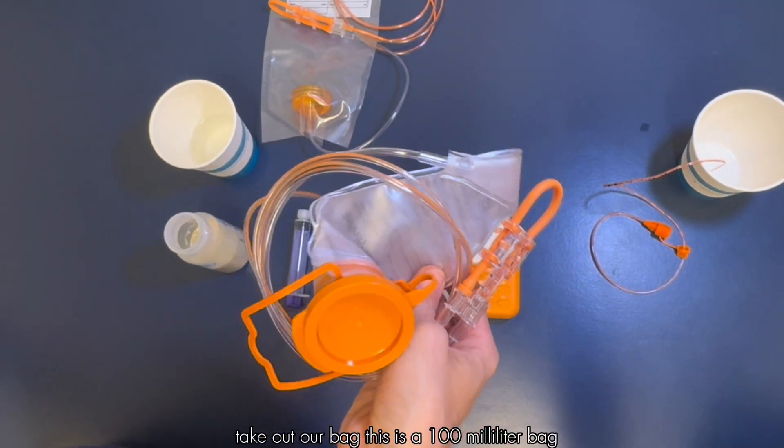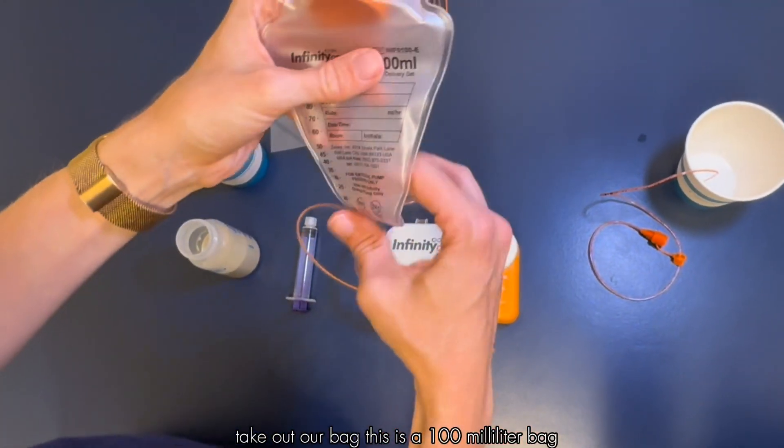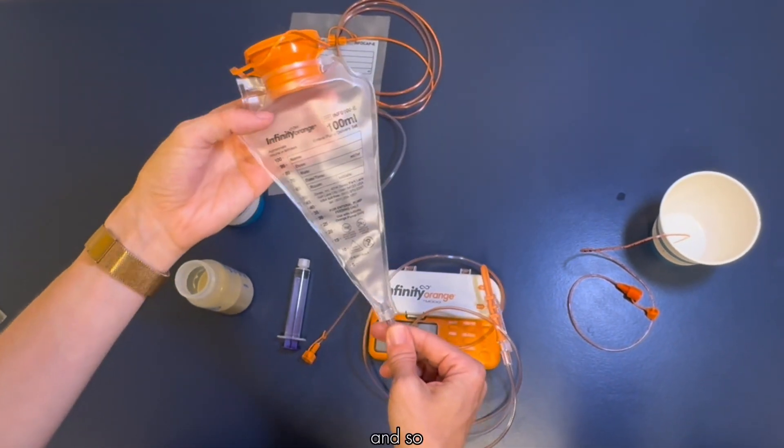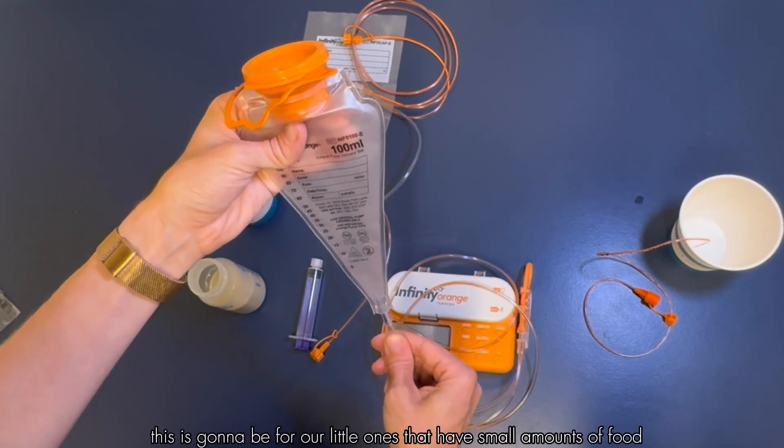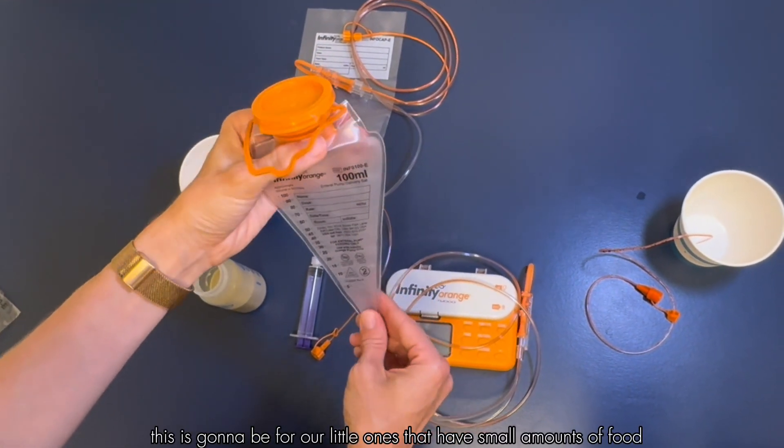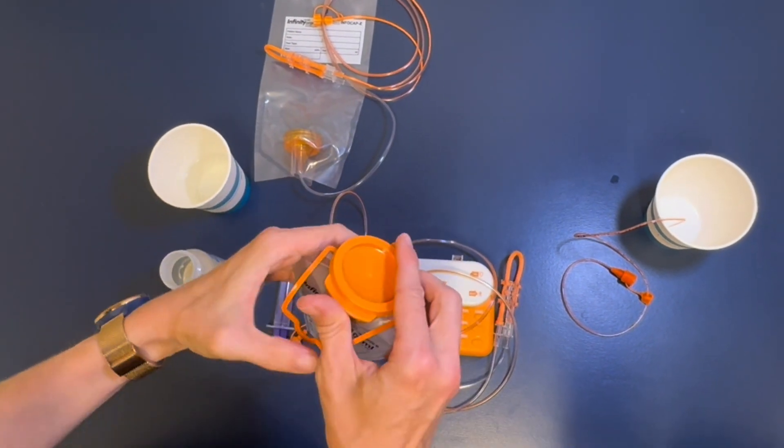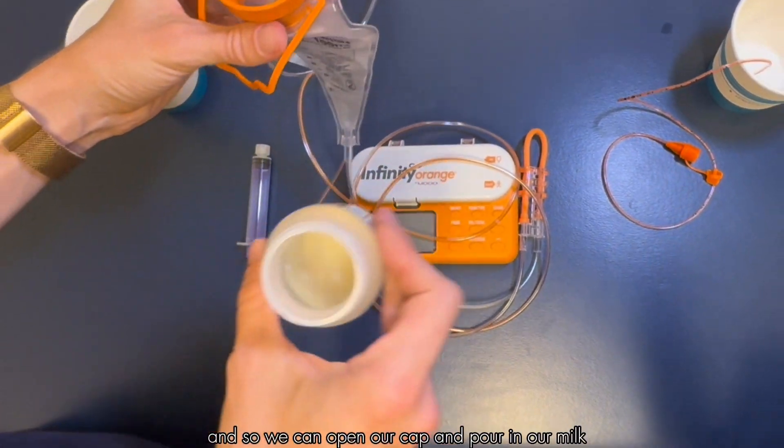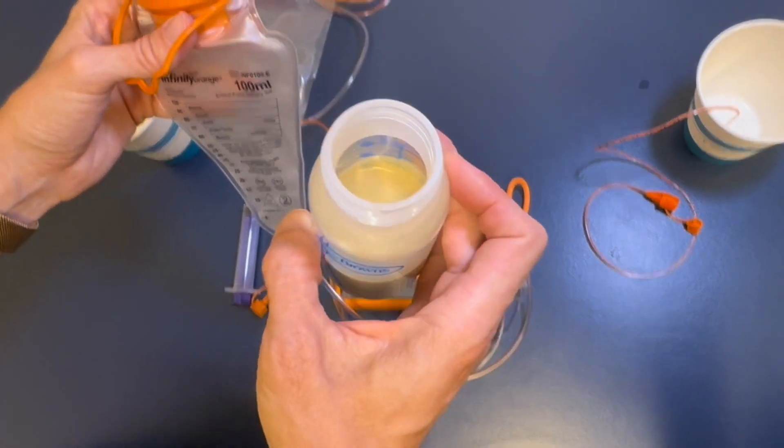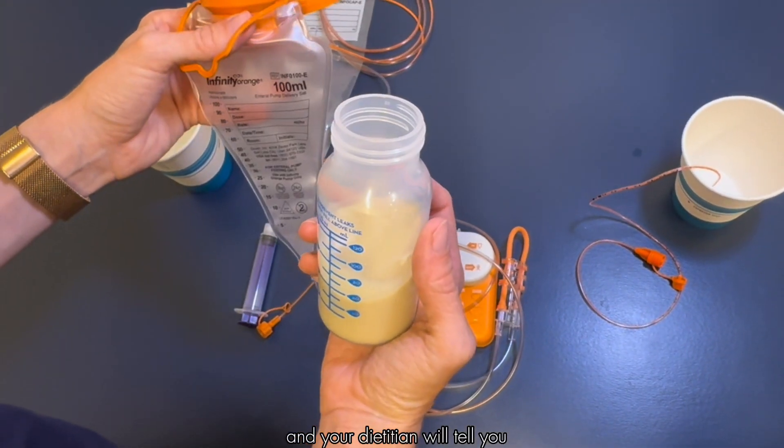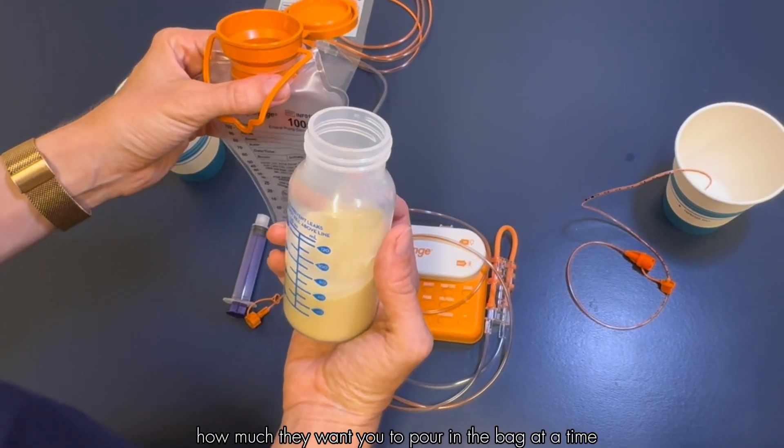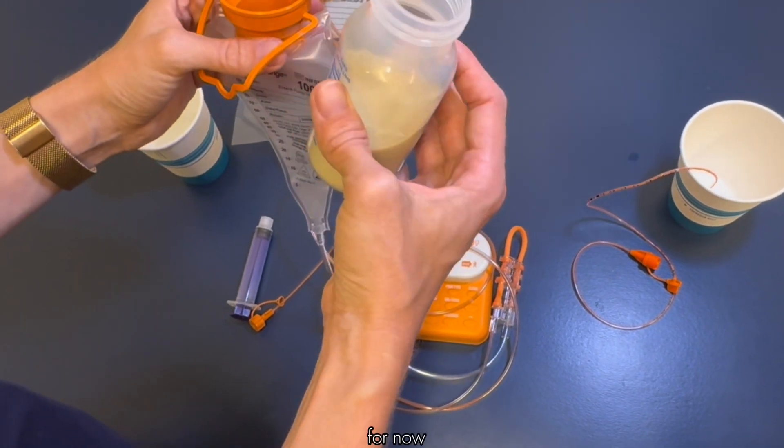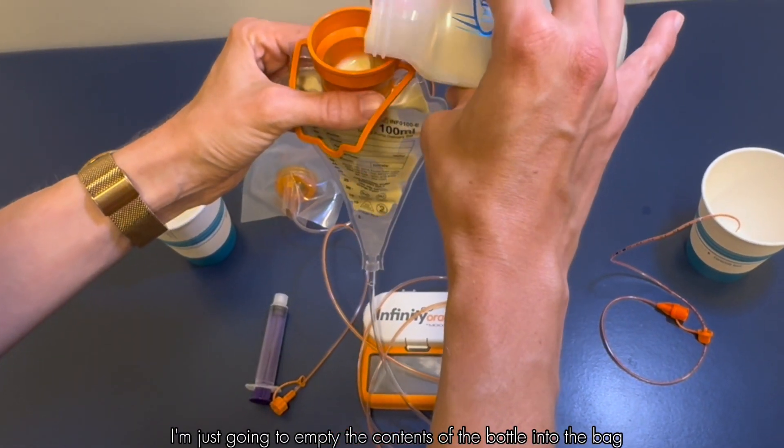We can open the packaging, take out our bag. This is a 100 milliliter bag so this is going to be for our little ones that have small amounts of food. We can open our cap and pour in our milk, and your dietician will tell you how much they want you to pour in the bag at a time. For now I'm just going to empty the contents of the bottle into the bag.